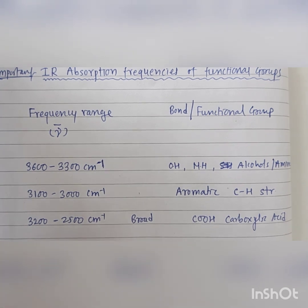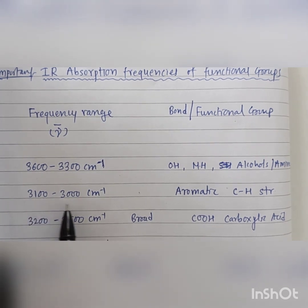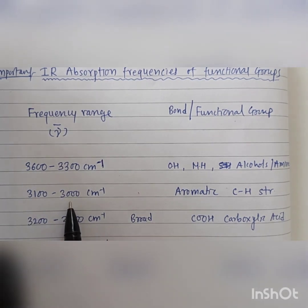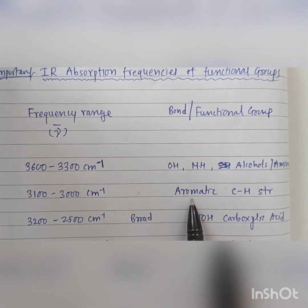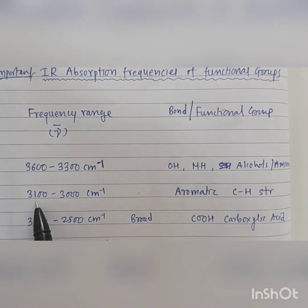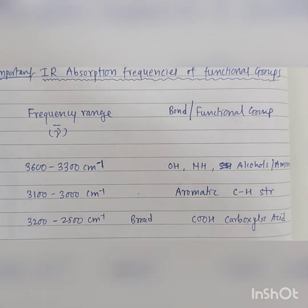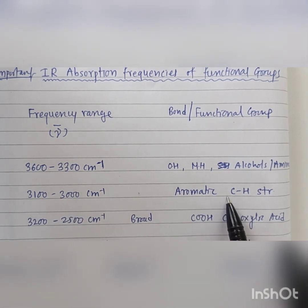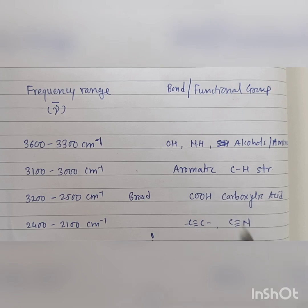The next important region of IR frequency is 3100 to 3000 centimeter inverse. This is the aromatic C-H stretch. So if there are peaks in this range, an aromatic compound can be identified.